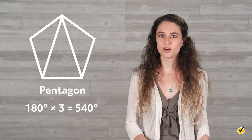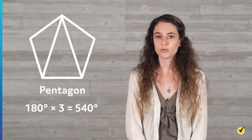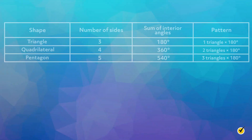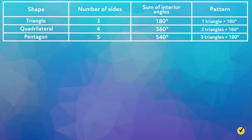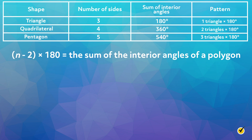Let us take a closer look and see if we can find a pattern. We will organize the information we have gathered so far into a table. The pattern shows that we always multiply 2 less than the number of sides the polygon has by 180. So we can create a formula where n represents the number of sides: n minus 2 times 180 equals the sum of the interior angles of a polygon.